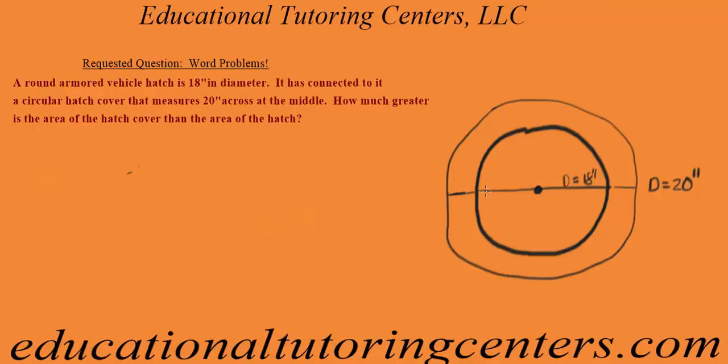So in the center with the darker line is the inner hatch, and then there's the hatch cover. It told us that the diameter of the vehicle's hatch is 18 inches. So diameter goes across the circle through the center, kind of like the spokes on a bicycle wheel. The diameter can come from any place inside of your circle as long as it's touching opposite ends of the circle through the center.